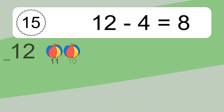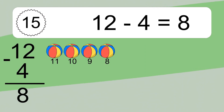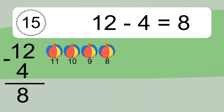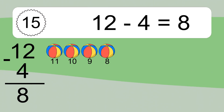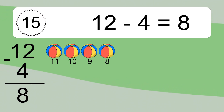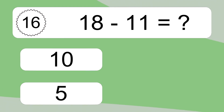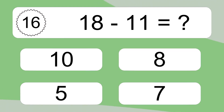12 minus 4 equals what? 12 minus 4 equals 8. Let's count it: 11, 10, 9, 8.